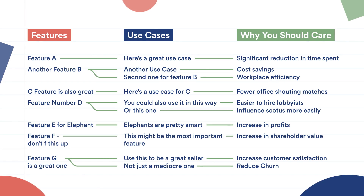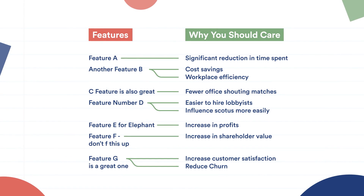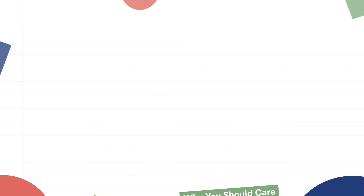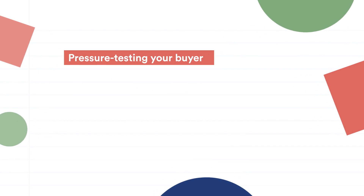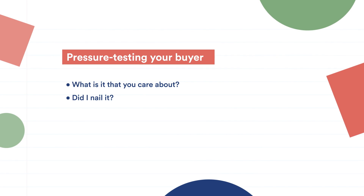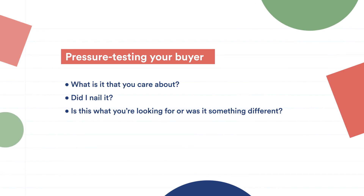If you show features without tying them to a clear outcome for the prospect, your demo is likely to fall flat. You have a limited amount of time and the worst thing you could do is spend that time talking about something they don't care about. If the demonstration is just one way with you talking the entire time, you won't find out what that thing is. That's why you have to constantly check in, constantly pressure test your buyer: what is it that you care about? Did I nail it? Is this what you're looking at? Or was it something different?